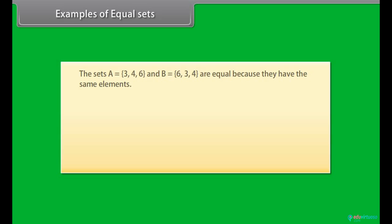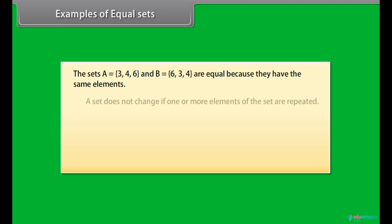Examples of equal sets. The sets A is equal to 3, 4, 6 and B is equal to 6, 3, 4 are equal because they have same elements.